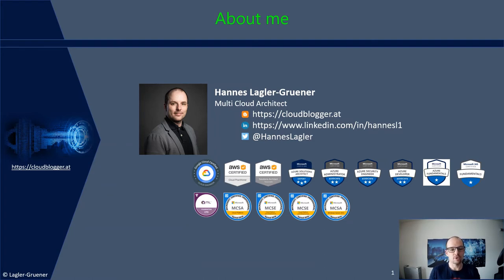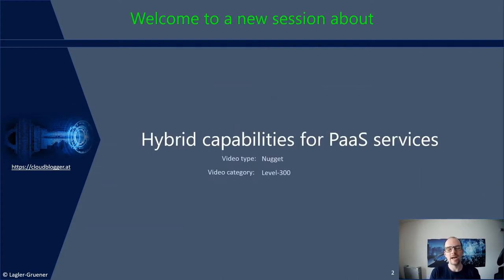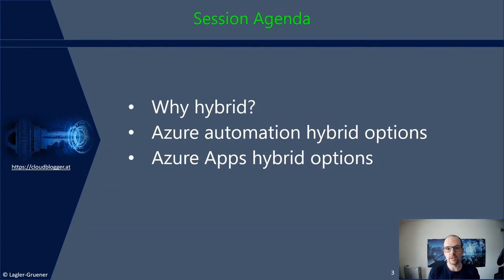Let's start with the agenda from today. Today we will discuss PaaS hybrid capabilities for PaaS services. This is also a session from the networking series, so it's a nugget video — it takes approximately 25 to 30 minutes, and the video category is level 300. The theory session will be short: first we discuss why hybrid, why should we use it and why we need it. Then we cover how — which hybrid capabilities we have for Azure Automation and for Azure Apps. At the end we have a live demo.